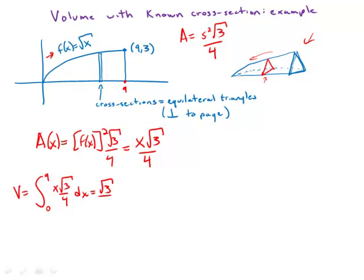Well, we'll take the root 3 over 4 out in front, and the antiderivative of x is just x squared over 2, evaluated at 0 and 9.